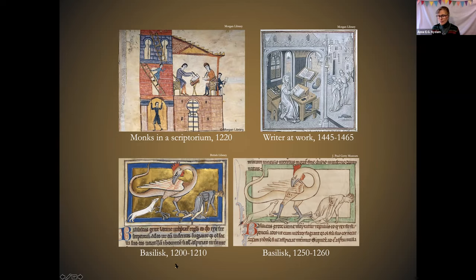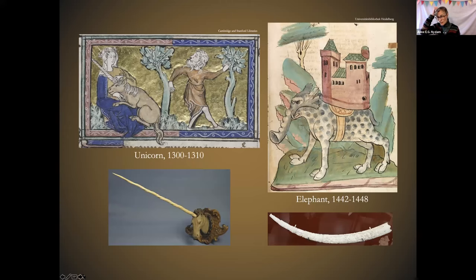Nowadays when people see the fantastical creatures and other scientific inaccuracies in bestiaries, they tend to sneer at medieval people and say, 'How could they be so ignorant? Couldn't they see that it wasn't true?' Well, first of all, you have to remember that there was a lot of it that no, they couldn't see. People didn't think dragons and unicorns were any more fantastical than camels or elephants — they were all equally exotic, all equally unlikely ever to be seen by ordinary people.